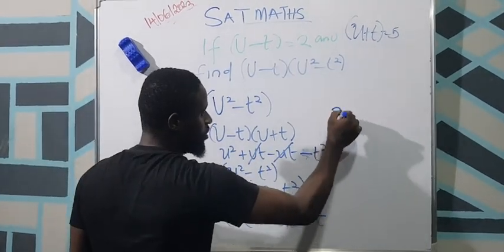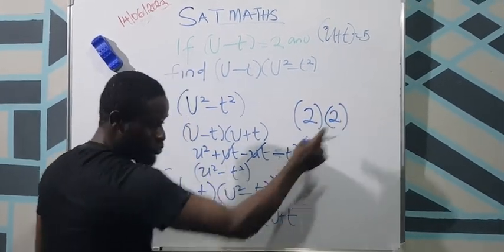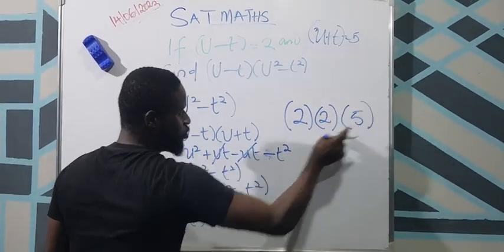What is u minus t? u minus t is 2. What is u plus t? u plus t is 5.